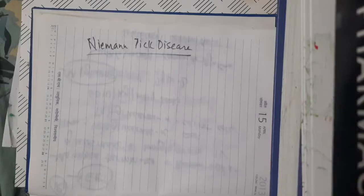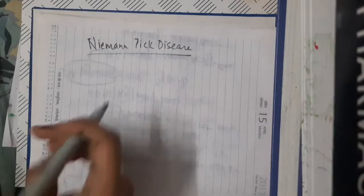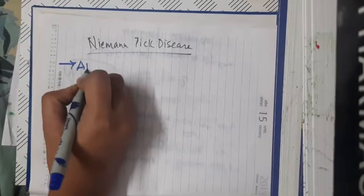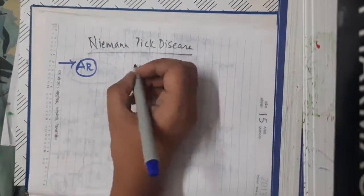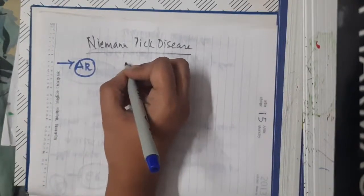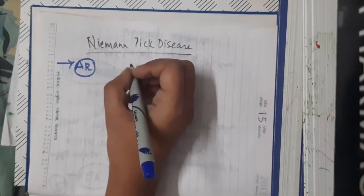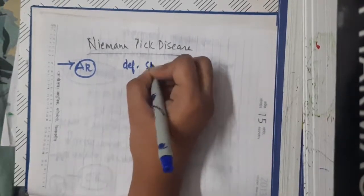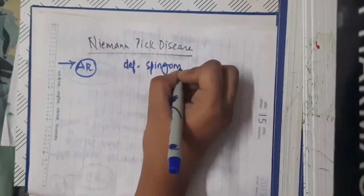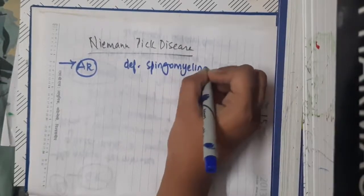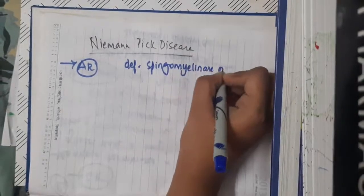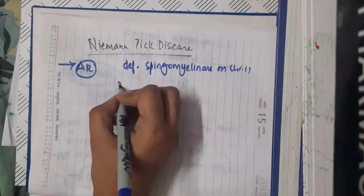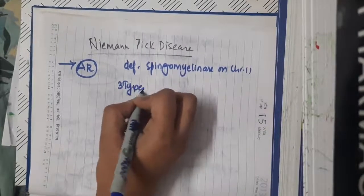Hello friends, let us now learn some important points about Niemann-Pick disease. Niemann-Pick disease is an autosomal recessive disorder of sphingomyelin and cholesterol in lysosomes. There is deficiency of the enzyme sphingomyelinase, seen on chromosome 11, and this Niemann-Pick disease is of three types: type A, type B, and type C.